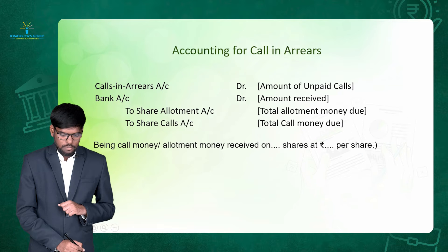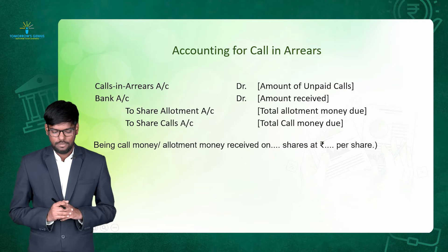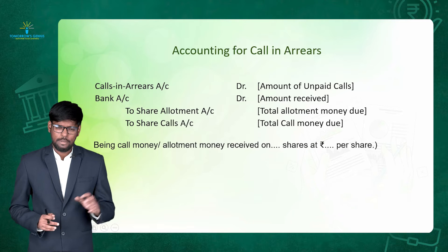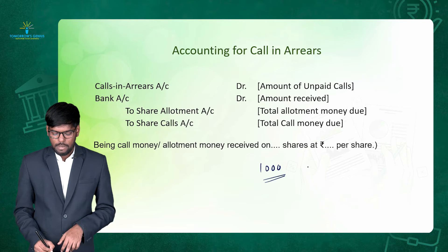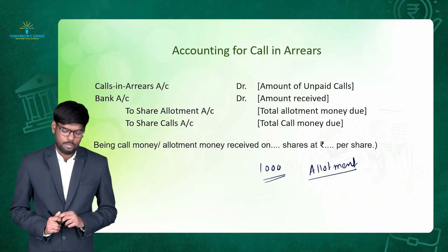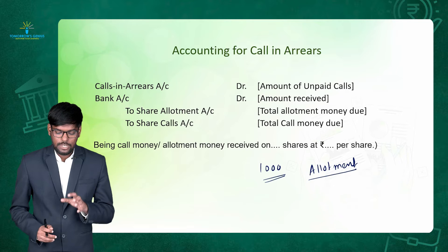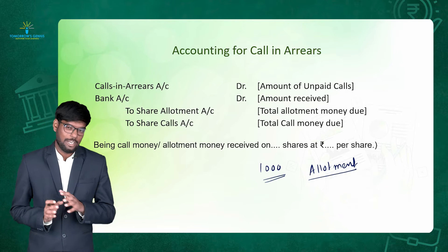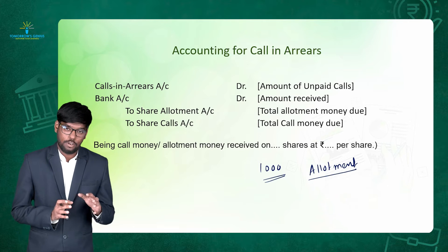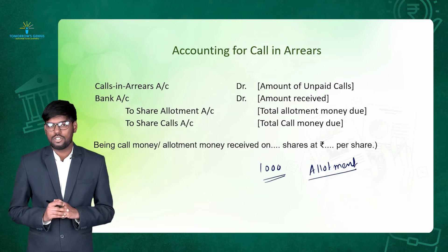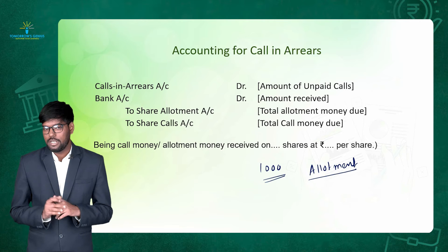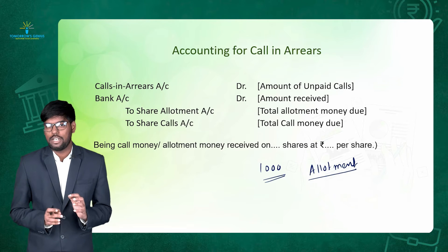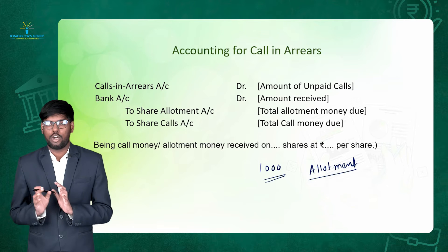Now we have to see which accounting entries we have to pass in order to record call in arrears. Continuing with the same example: Prakash is holding 1000 shares of the company. Suppose he is unable to make the payment of allotment money. In the allotment stage, we first pass a journal entry for recording the transaction — equity share allotment account debit to share capital. Then we pass a journal entry for receipt of money — bank account debit to equity share allotment account.